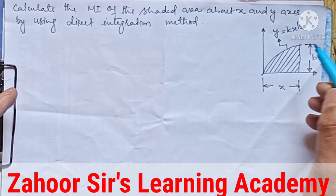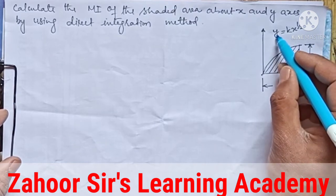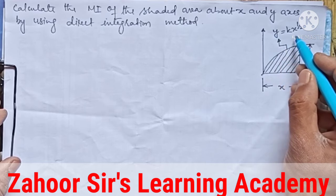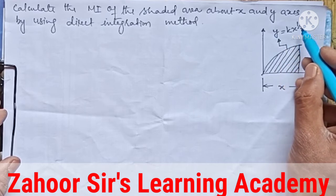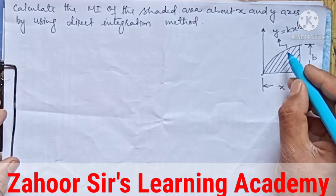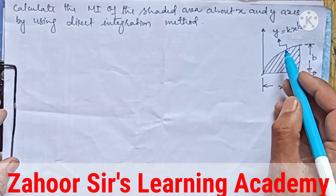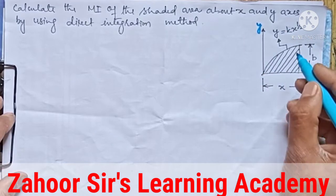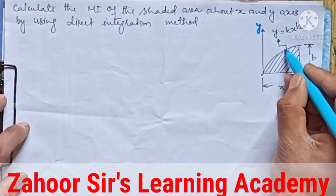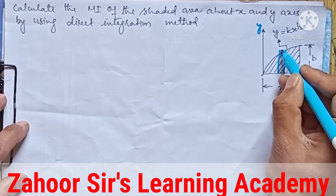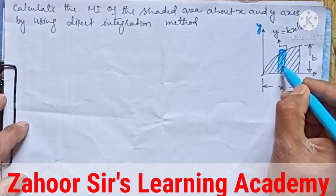Again, in this case the curve equation is given in y-formation, that is y is equal to kx^(1/2). Therefore we have to cut a strip in such a way that the strip should be parallel to the Y axis. So this is the Y axis and this is the X axis, and we will cut the strip like this — so this is an elementary strip.